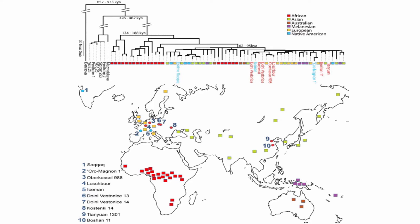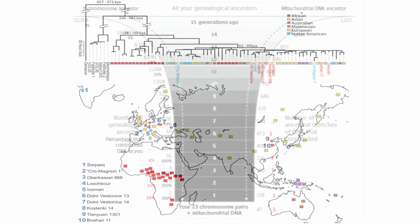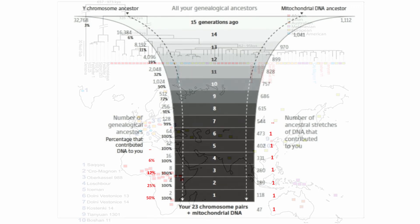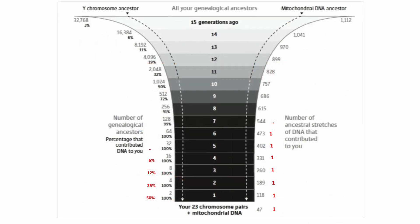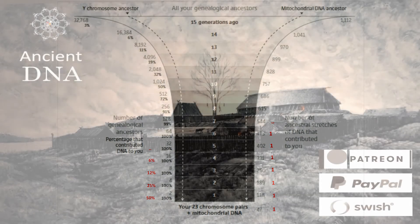Similar estimates for Y-chromosomal Adam place him at 200,000 to 300,000 years ago. To understand why we end up with an Adam and Eve — even as non-Africans carry archaic human DNA from Neanderthals — let's revisit the genealogical ancestor figure. For haplogroups, the washout is exponentially faster: each generation, the likelihood of carrying the mitochondrial DNA of a particular maternal ancestor halves. Population bottlenecks eventually bring ancestral lines out of circulation.